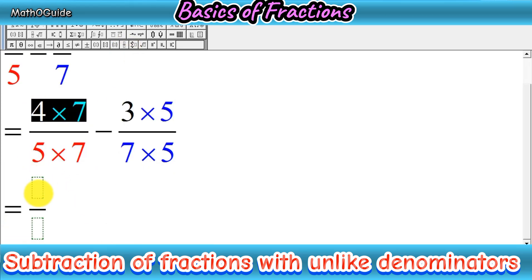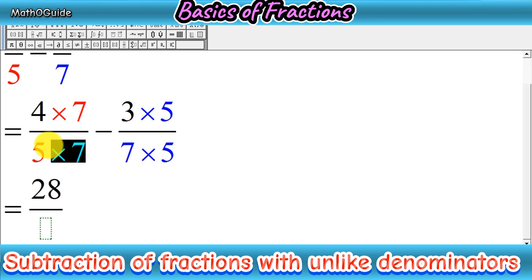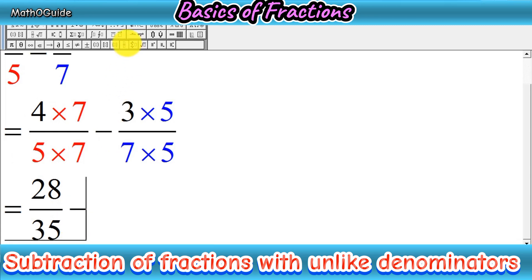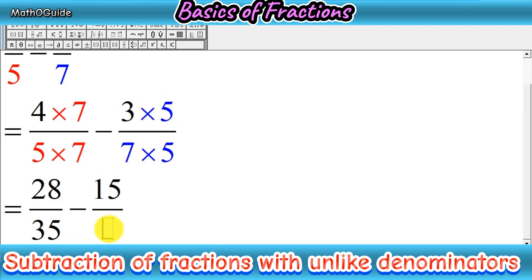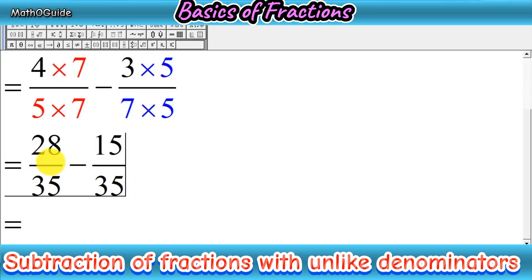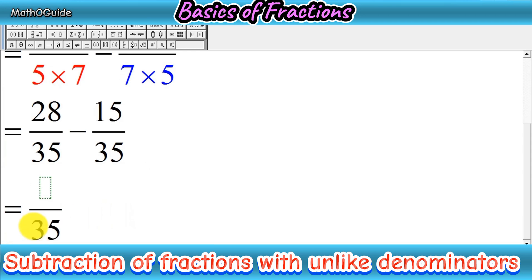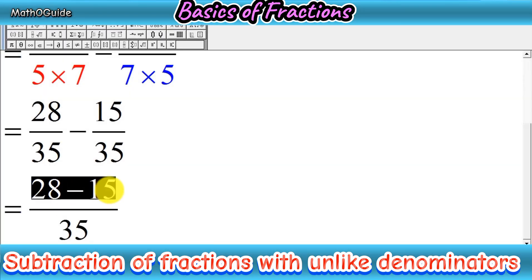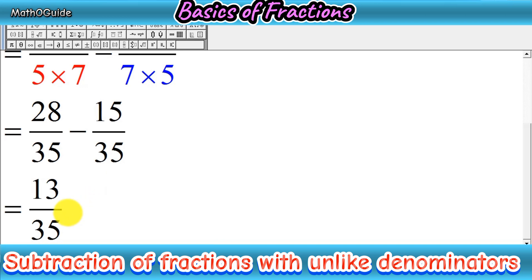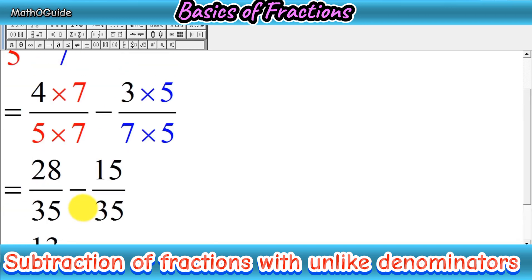Now we simplify: 4 times 7 is 28, and 5 times 7 is 35, so the first fraction becomes 28 over 35. Then minus, and the second fraction: 3 times 5 is 15, and 7 times 5 is 35, giving 15 over 35. Now we have a subtraction of fractions with like denominators, so we write the denominator once and subtract the numerators: 28 minus 15 equals 13, giving the answer 13 over 35.